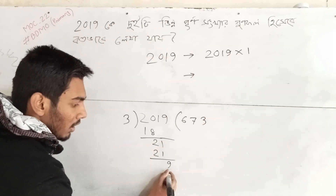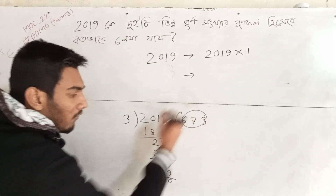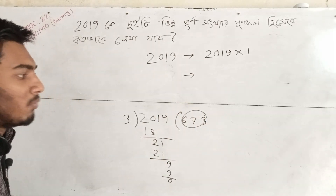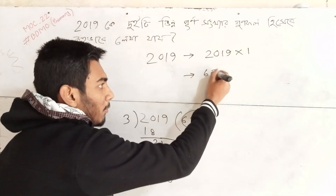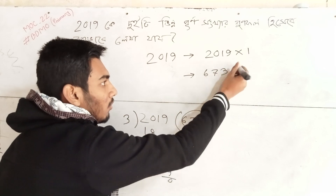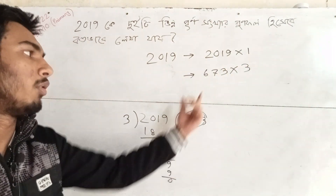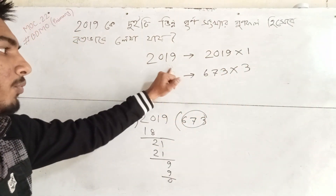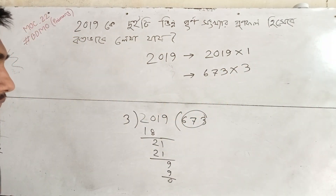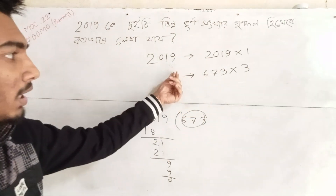3, 3, 9. I will tell you that 6, 7, 3, 3. How do you do this? 2019K. This is 2019K.